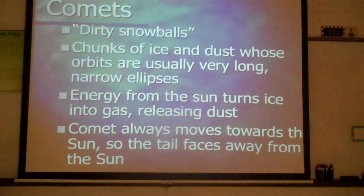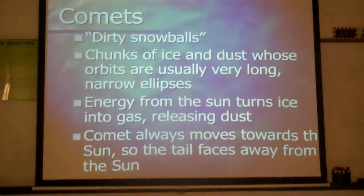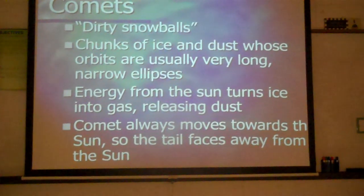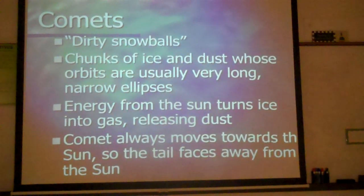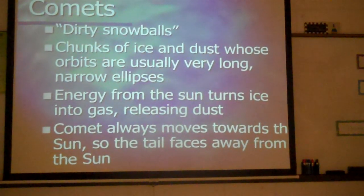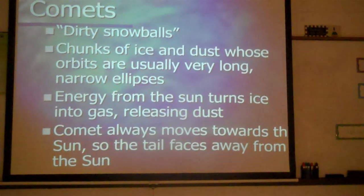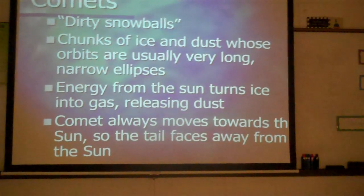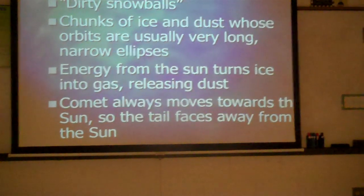The tail is facing away from the sun because the tail is the ice that is melting and releasing the gas, which is what the tail looks like. This causes the ice to burn up as the comet moves towards the sun.